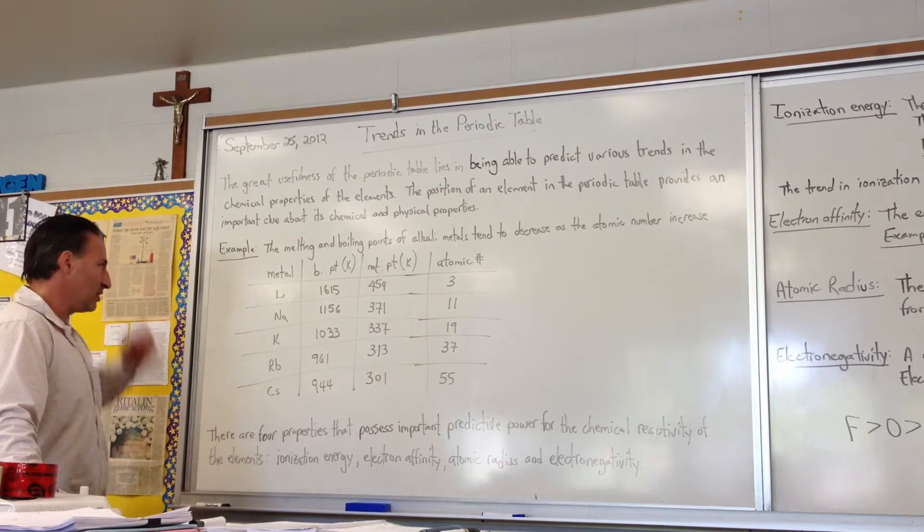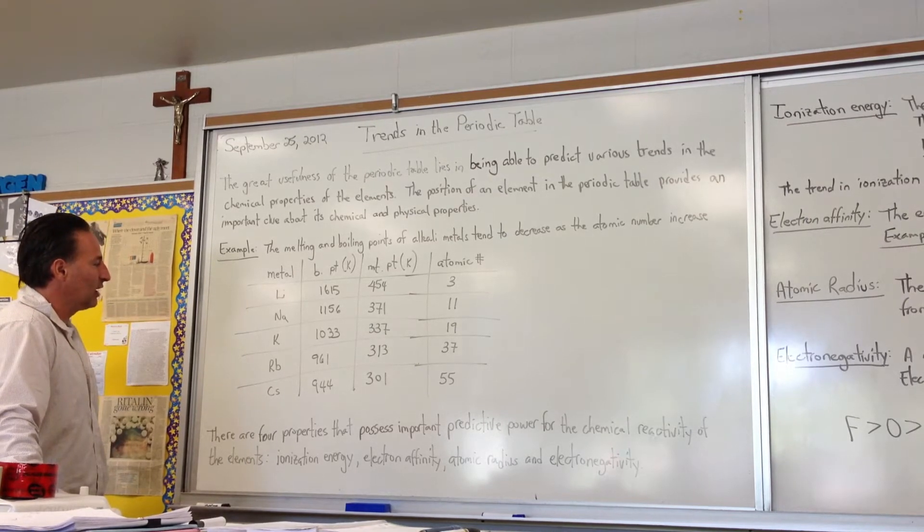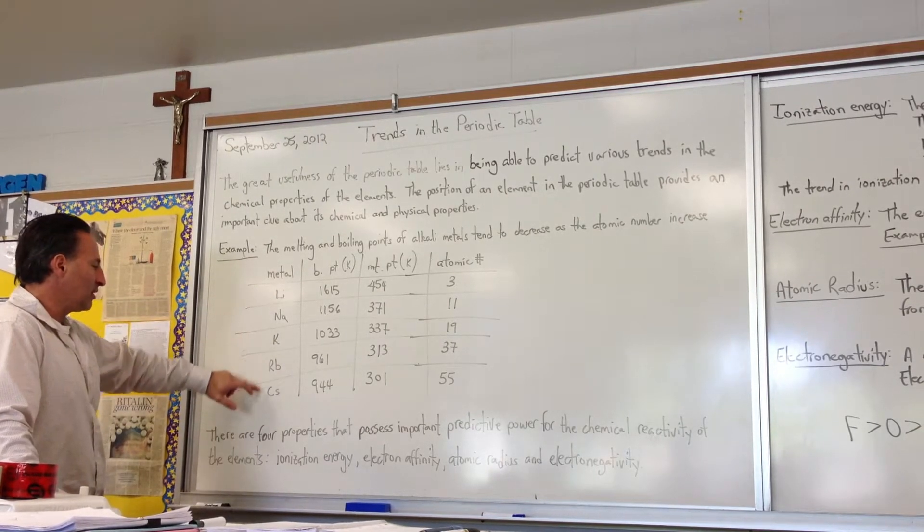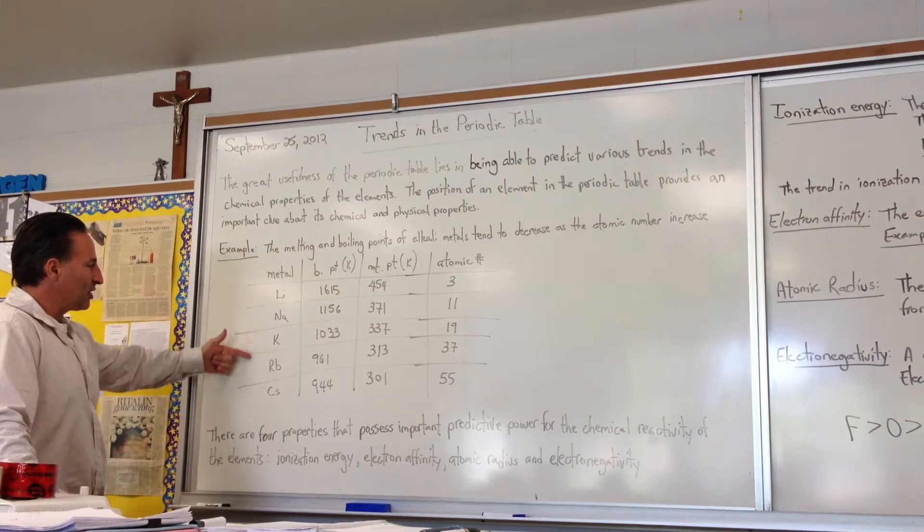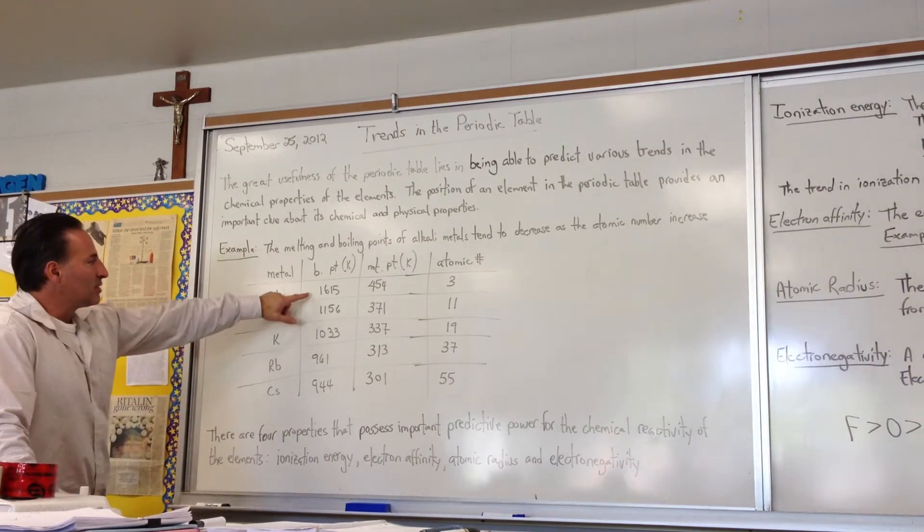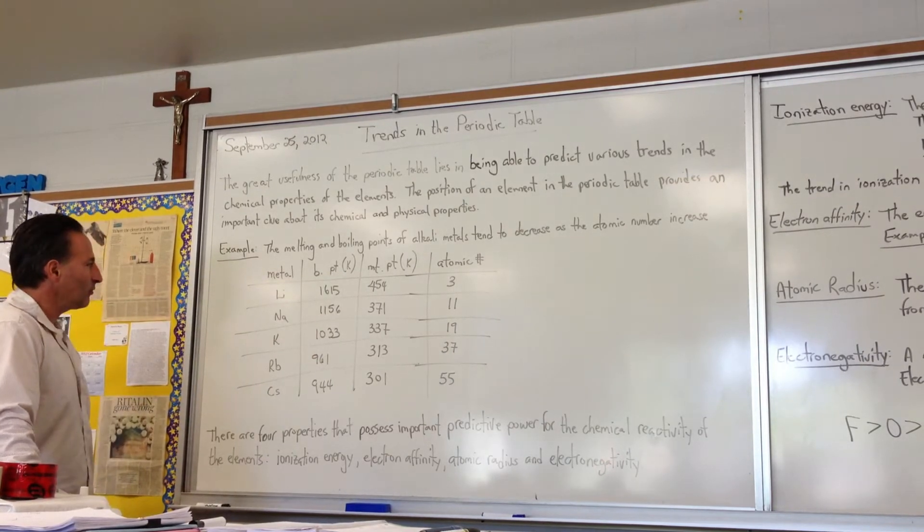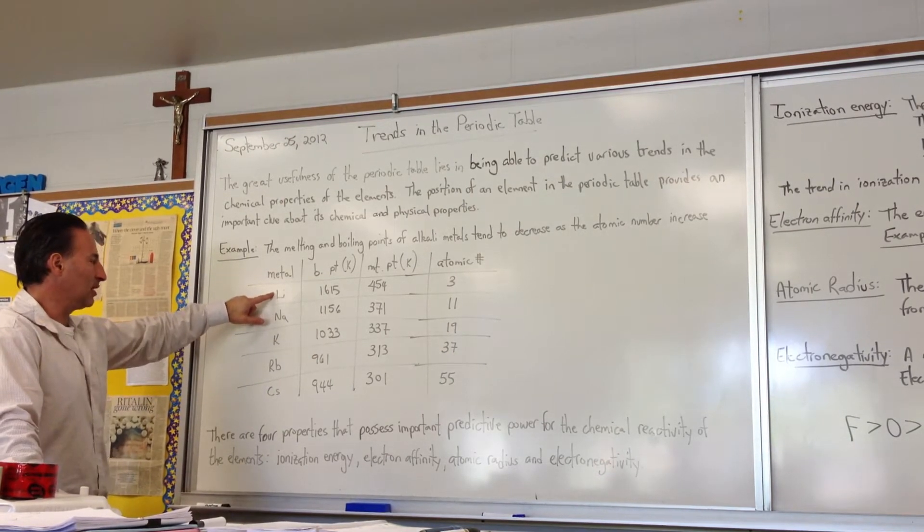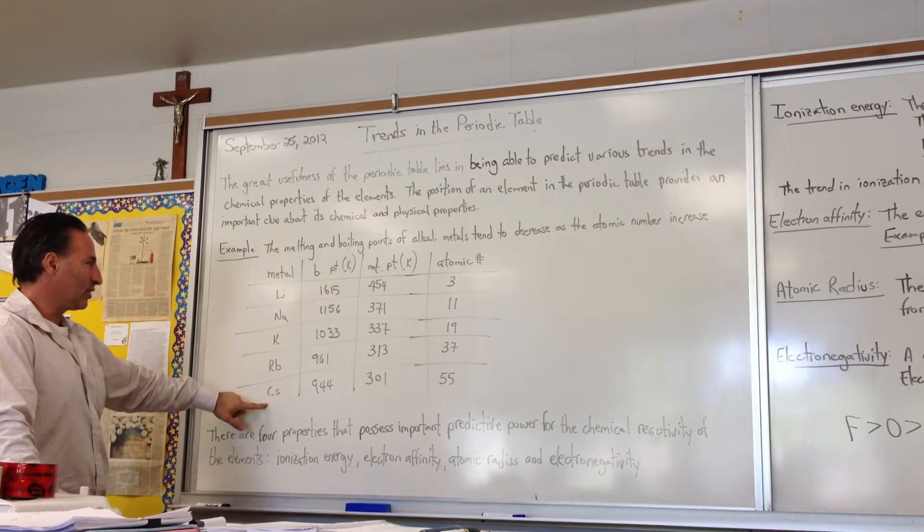So the position of the elements in the periodic table provides an important clue about its chemical and physical properties. To give you an example, I wrote down the melting points and the boiling points of the alkaline metals. I chose lithium, sodium, potassium, rubidium, and cesium. You'll see that as the atomic number of the metal increases, as the metal gets bigger, its boiling point decreases. I recorded it in Kelvin. So lithium has a boiling point of 1,600, and cesium was way down here at 944.